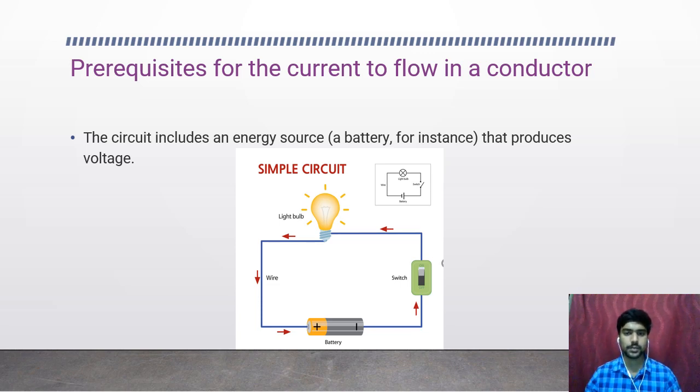The circuit forms a closed conducting loop through which electrons can flow. The circuit is said to be closed or complete when a switch is in on position. When it is in off position there will be a gap in the circuit and it doesn't allow the flow of current in the circuit.